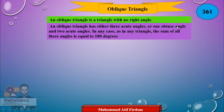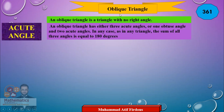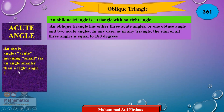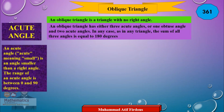Acute means less than 90 degrees. An acute angle is an angle smaller than a right angle. It is an angle in the range between 0 and 90 degrees — between 0 and 90 is an acute angle.